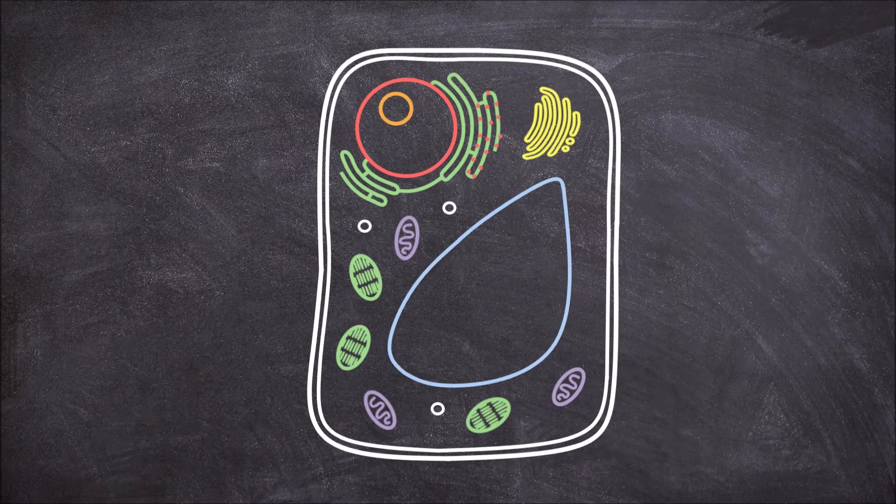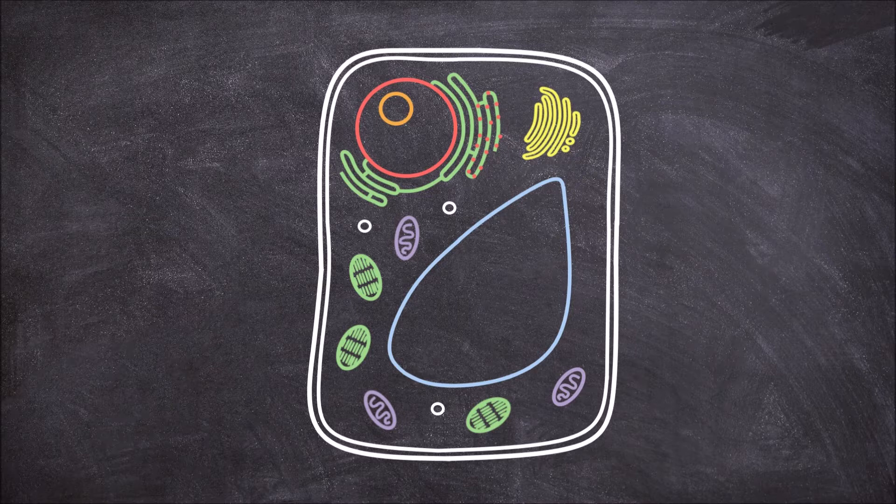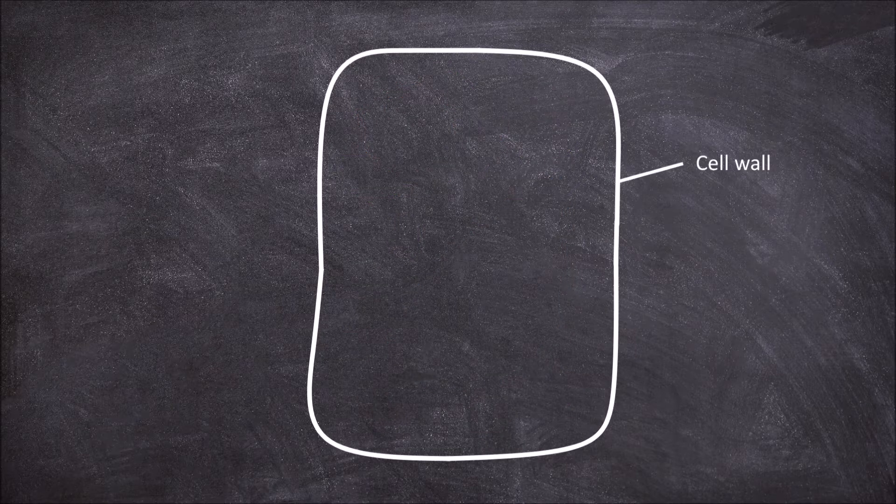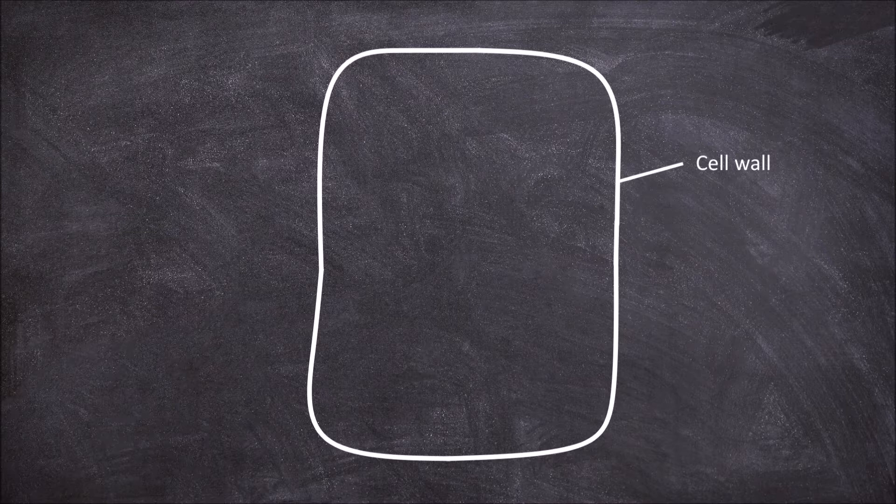In this video we are going to talk about the basic structure of a plant cell. The plant cell is surrounded by a rigid cell wall. The cell wall functions in protecting the cell and also in providing structural support to the cell.